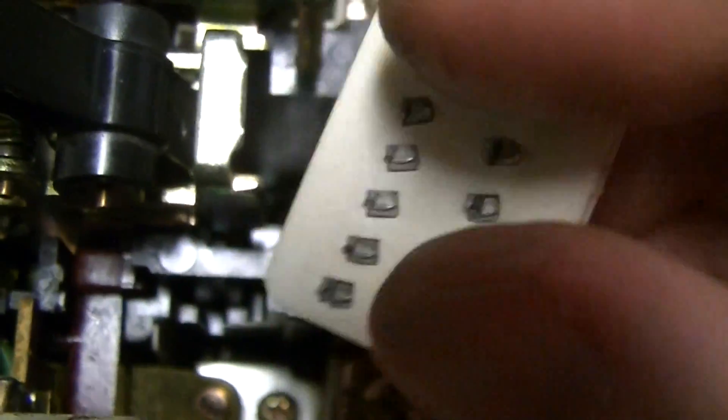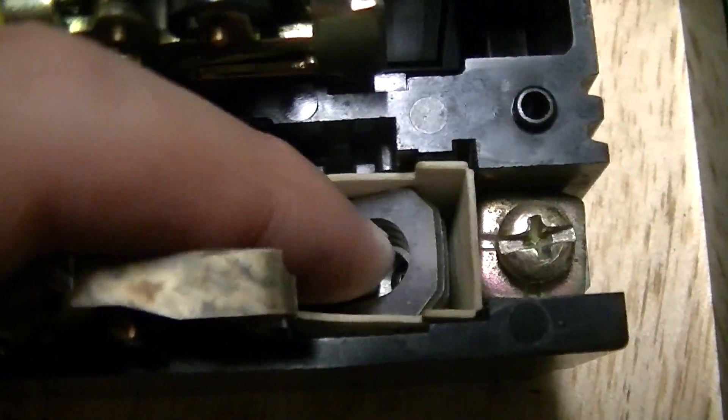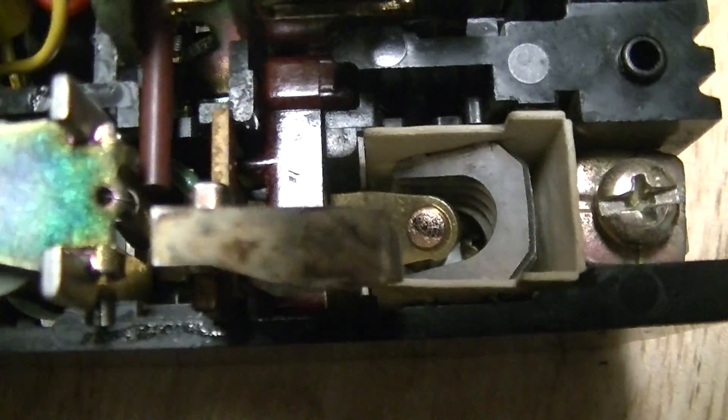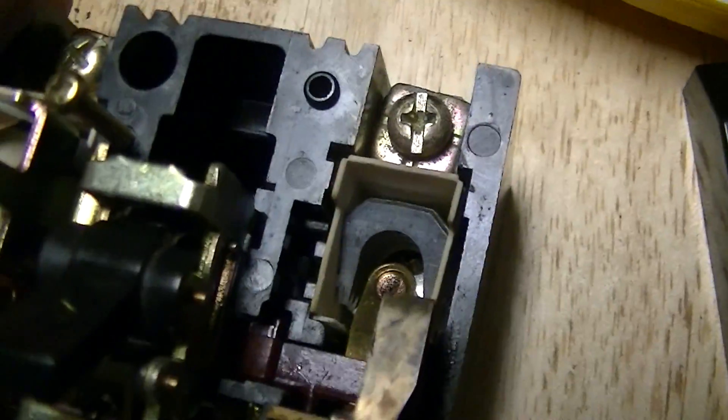There's this device which is intended to quench the arc that forms if this thing trips under a heavy load. The way it works is that the arc bows upward, because ordinarily this would be the up direction.